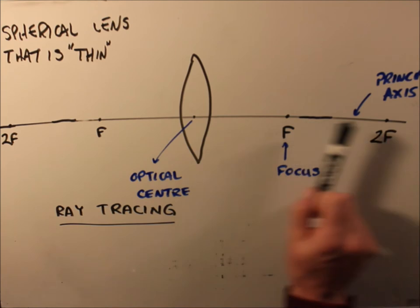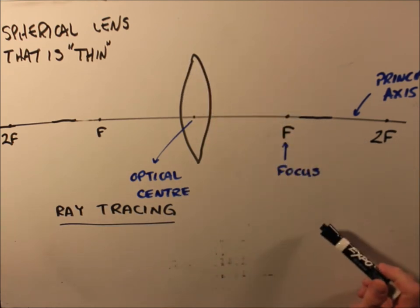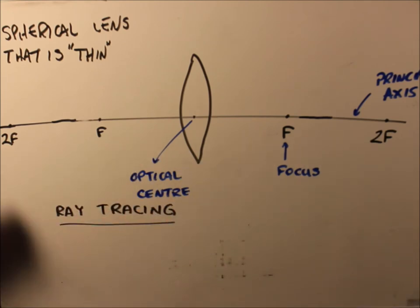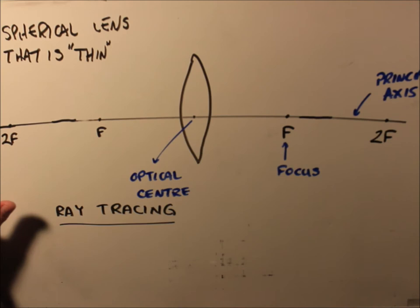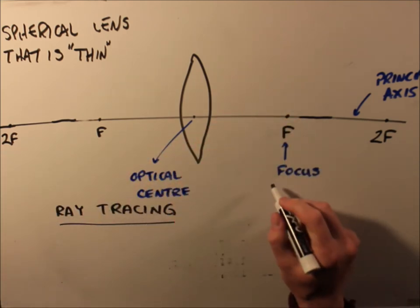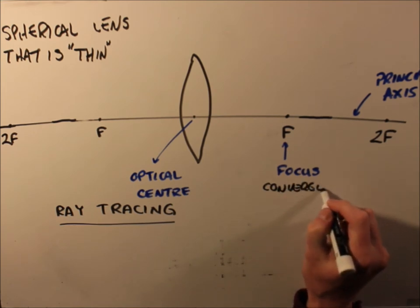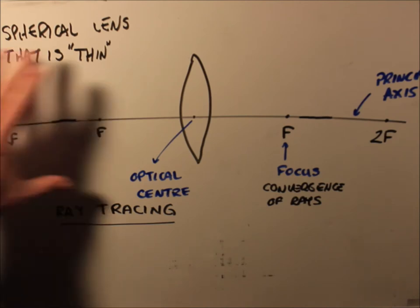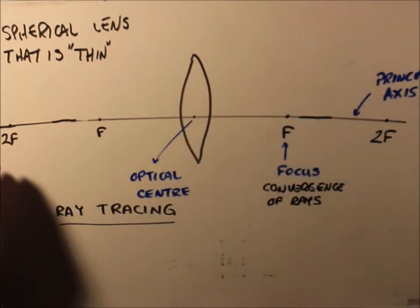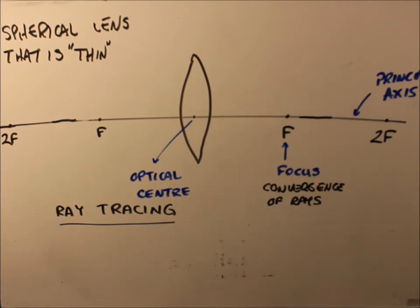Real lenses are three-dimensional, and determining the bends requires calculus, which is why we don't go much beyond this in high school. Even so, we learn quite a bit in our simplified universe. We have the convergence point of rays on both sides of the lens, because light could come from either side to form an image — there is a symmetry here.